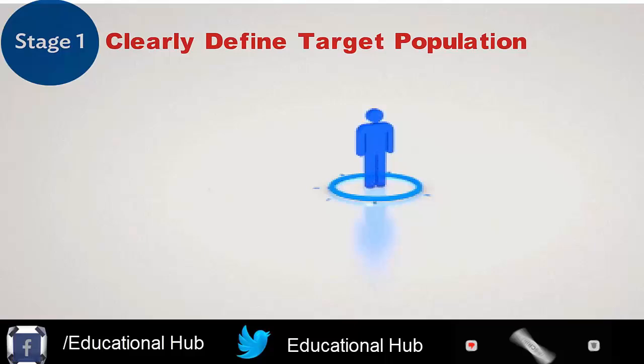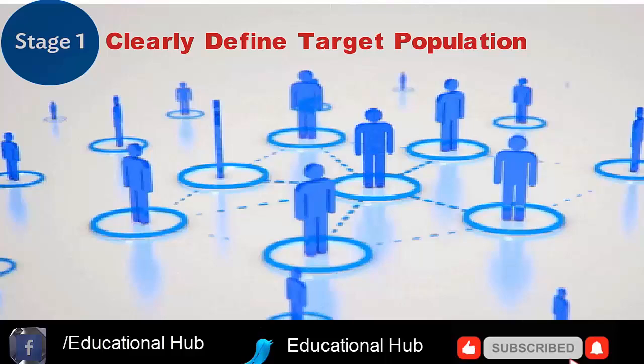Stage 1: Clearly define target population. The first stage in the sampling process is to clearly define the target population. Population is commonly related to the number of people living in a particular country.